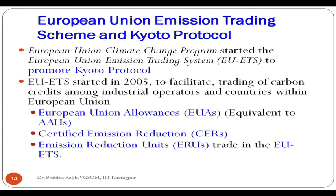The carbon credits traded at EU ETS are known as European Union Allowances, or EUAs, which are equivalent to AAUs — there is no difference between AAUs and EUAs, they are the same. These EUAs were traded at EU ETS, and besides European Union Allowances, Certified Emission Reduction units and Emission Reduction Units were also traded at EU ETS.